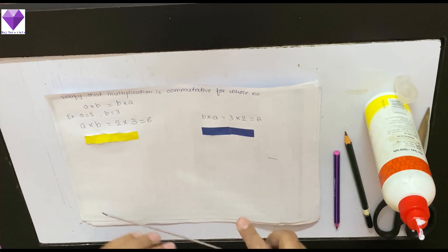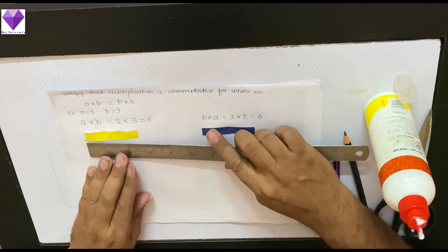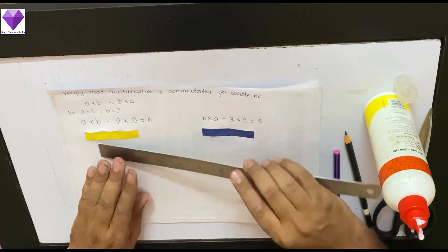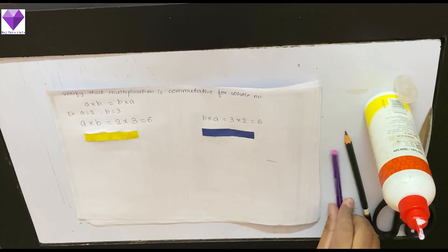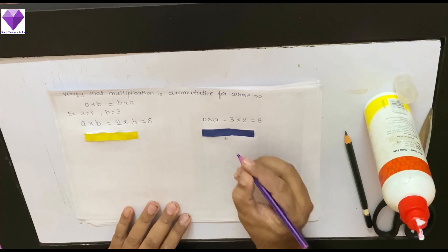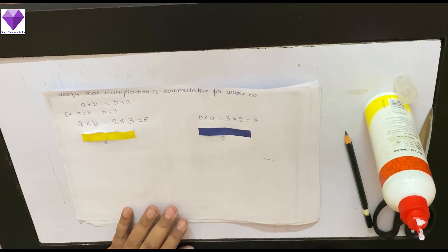Now, I am measuring both strips. This is also coming as 6 centimeter. This is also coming as 6 centimeter. So, both are coming 6 centimeter. So, my property is proved.